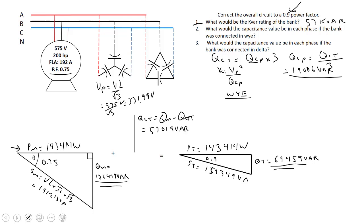Let's use our formula now. So XC equals 331.98 volts squared divided by our reactive power per phase from our capacitor bank, 19,006 VAR. That works out to be about 5.8 ohms.